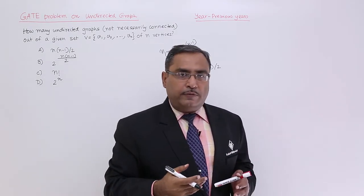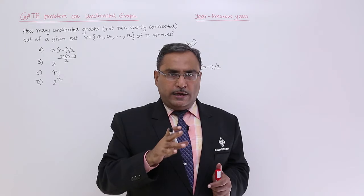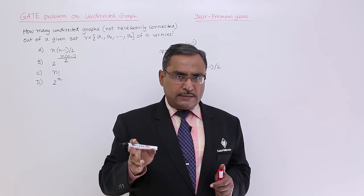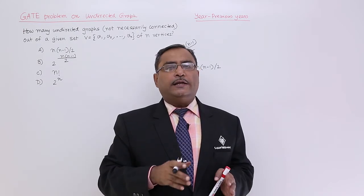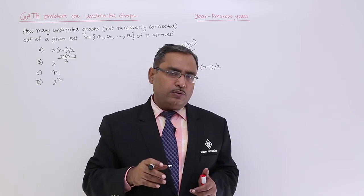This number of graphs will be there because n(n-1)/2 number of edges, they may or may not occur. So if you go for all possible combinations, it is 2^(n(n-1)/2).